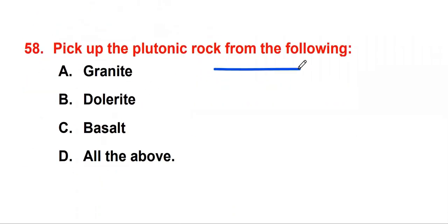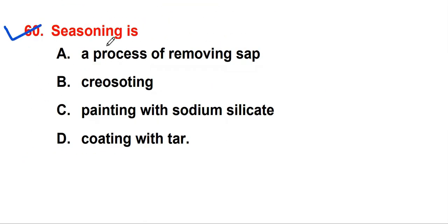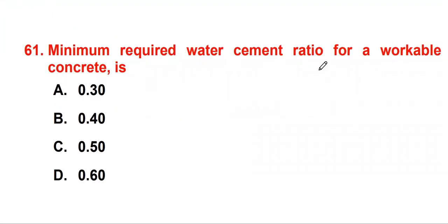Shingle is decomposed laterite. Pick up the plutonic rock from the following - answer is granite. Pozzolana or surkhi is used in lime to impart hydraulicity. Seasoning is a process of removing sap. Sap is the fluid which circulates in plants. Seasoning reduces moisture content, that is fluid content, sap, or moisture content. To make wood lightweight or dry. Minimum required water cement ratio for workable concrete is 0.40.